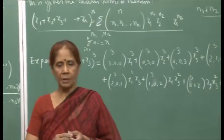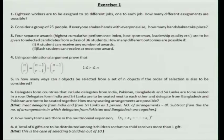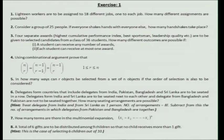Let me discuss the exercise sheet. Question 1: 18 workers are to be assigned to 18 different jobs. The important point is that each job is different, so this will be an ordered arrangement of the 18 workers — you can write down how many possible assignments are possible. Question 2: consider a group of 25 people; if everyone shakes hands with everyone else, how many handshakes take place? If A shakes hands with B, both have shaken hands, so keep that in mind.